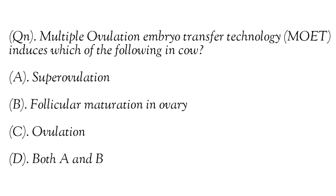Next one: Multiple Ovulation Embryo Transfer technology, that is MOET, induces which of the following in a cow? Option A - Super ovulation, Option B - Follicular maturation in ovary, Option C - Ovulation, Option D - Both A and B. Multiple Ovulation and Embryo Transfer technology, M.O.E.T., is a method used for the hybridization of cattle.